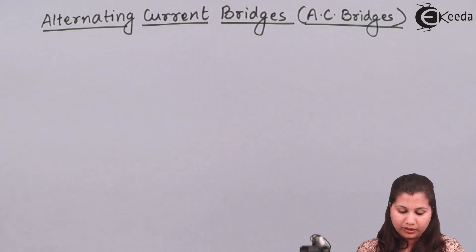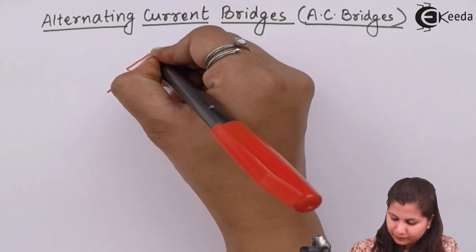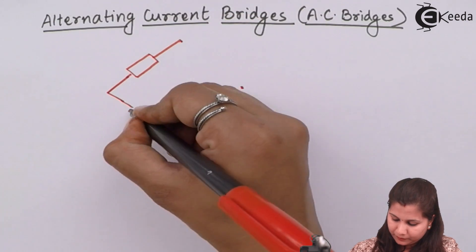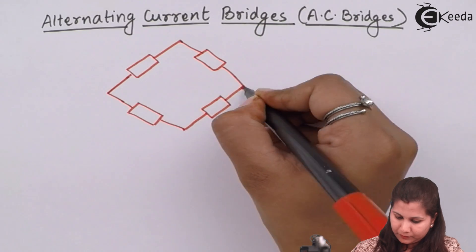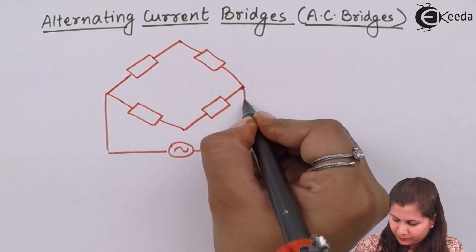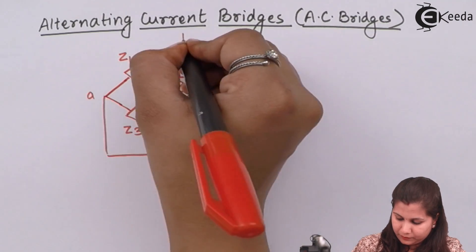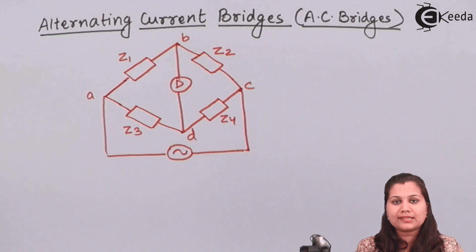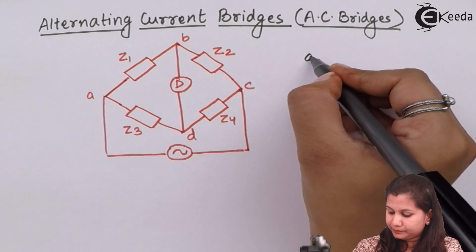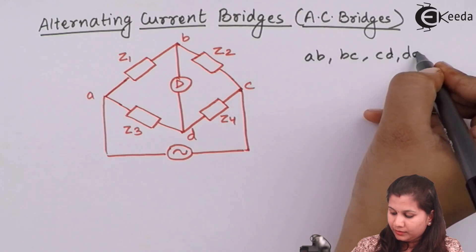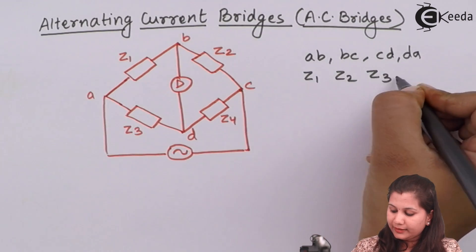If we draw a basic AC bridge network, it will consist of four arms. This is an alternating current bridge in which we have four arms: AB, BC, CD, and DA. In these four arms we have four impedances Z1, Z2, Z3, and Z4.